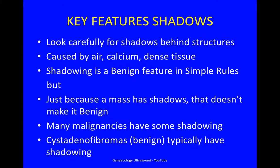Look carefully for shadowing behind structures. They're caused by air, calcium, or dense tissue. Shadowing is a benign feature in simple rules, but just because a mass has shadows, that doesn't make it benign. Many malignancies have some shadowing, and cystadenofibromas, which are benign, typically have shadowing.